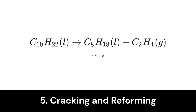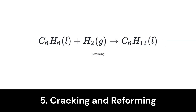Let's explore the cracking and reforming processes that completely reshape the petroleum industry. Cracking involves breaking down large hydrocarbons into smaller ones, like converting C10H22 into C8H18 and C2H4.